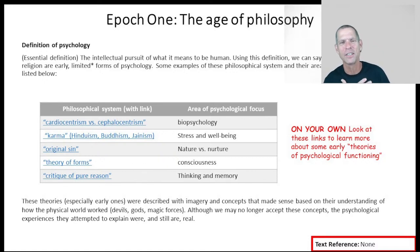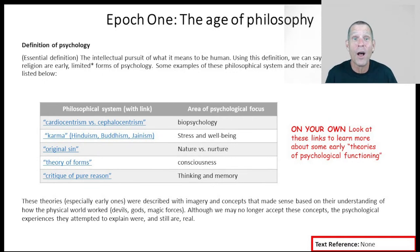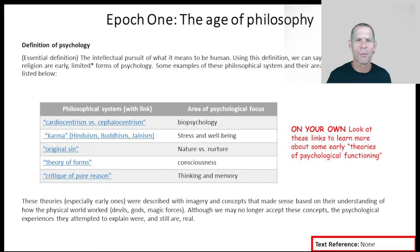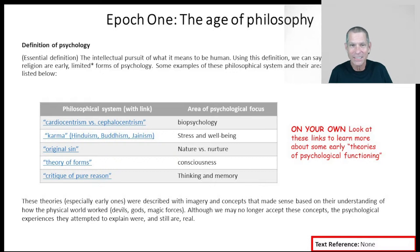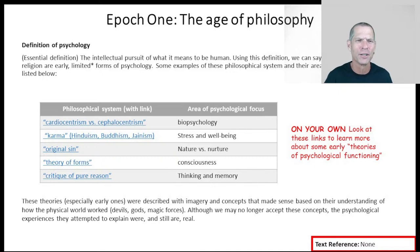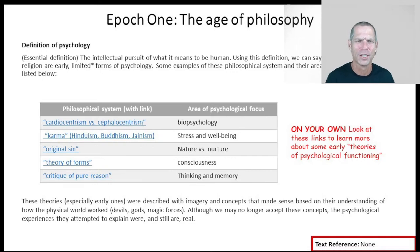If you believe in karma — the idea that doing bad things will lead to bad outcomes for yourself — that's sort of a stress and well-being theory of human functioning, saying that if we do and think the right things, we'll be stress-free and happy. When we get to the later chapters, I'm going to talk to you about how you can live a happier life full of well-being. In a sense, we'll be harking back to thoughts thousands of years old from Hinduism, Buddhism, and other branches of philosophy.